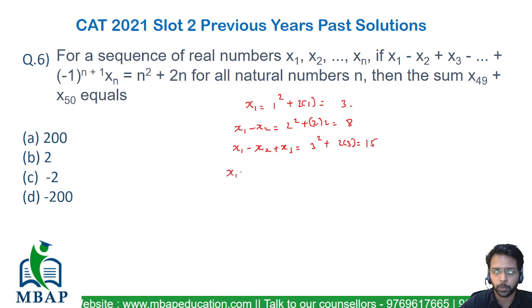Let's see one more expression x1 minus x2 plus x3, sorry, minus x4 should be equivalent to 4 square plus 2 times 4 which will be equivalent to 24. 16 plus 8 will be equivalent to 24. And let's see if we can derive some pattern out of this.